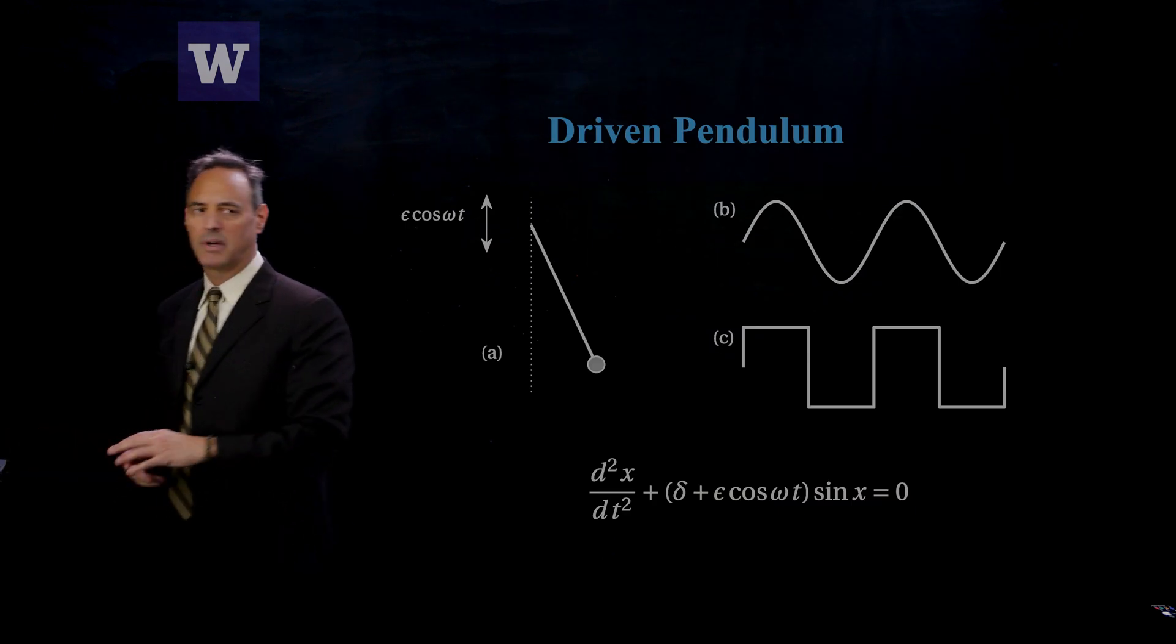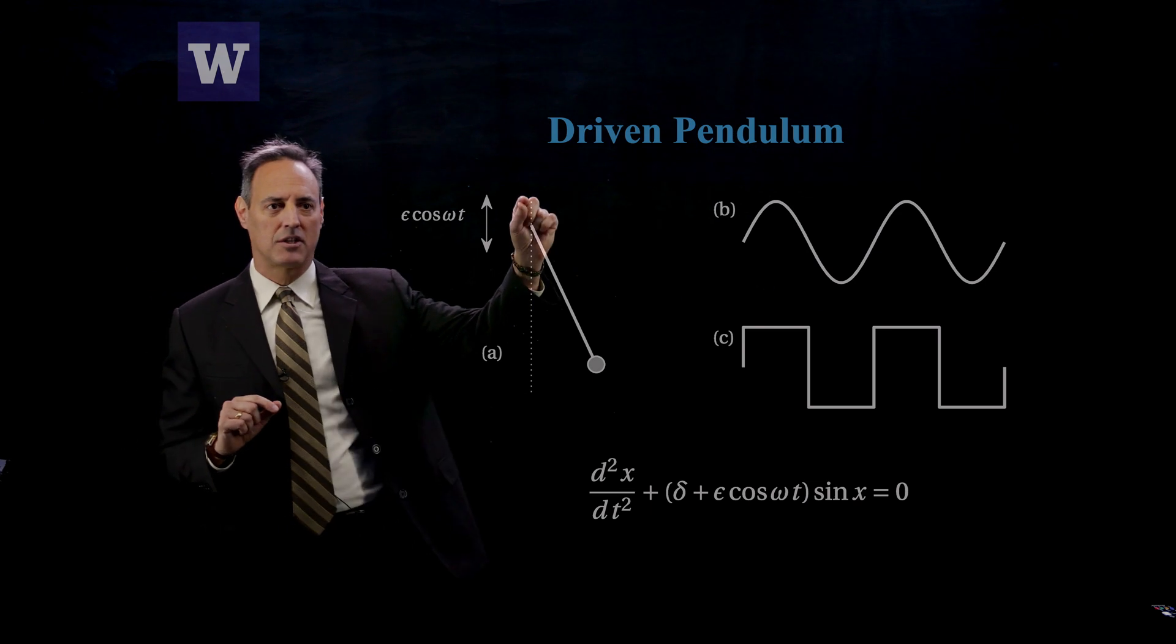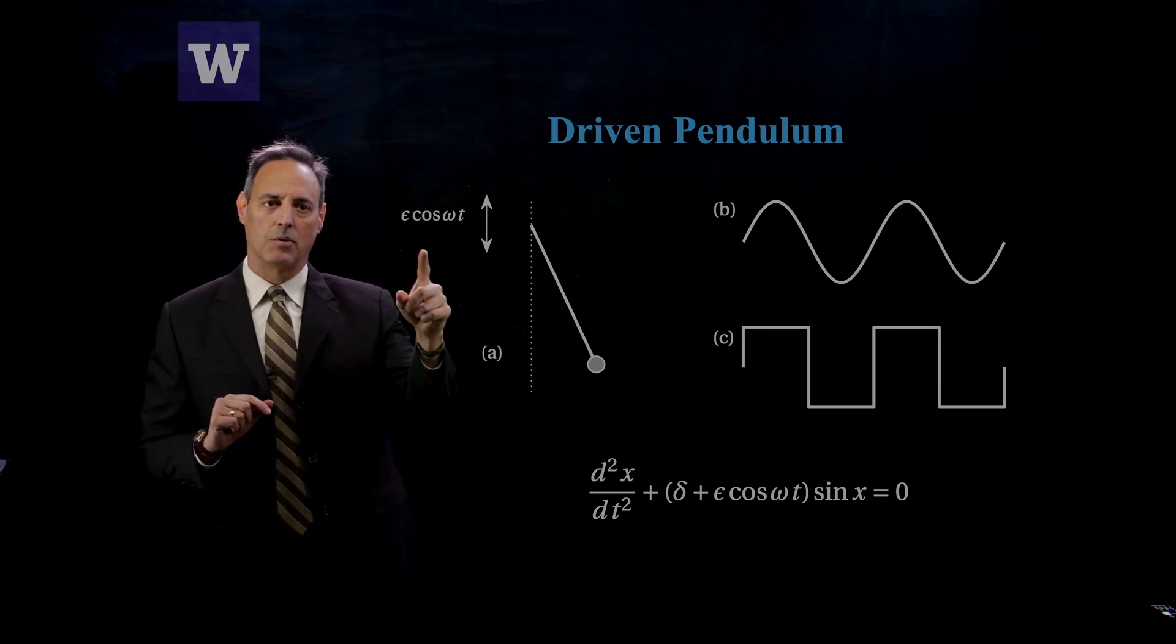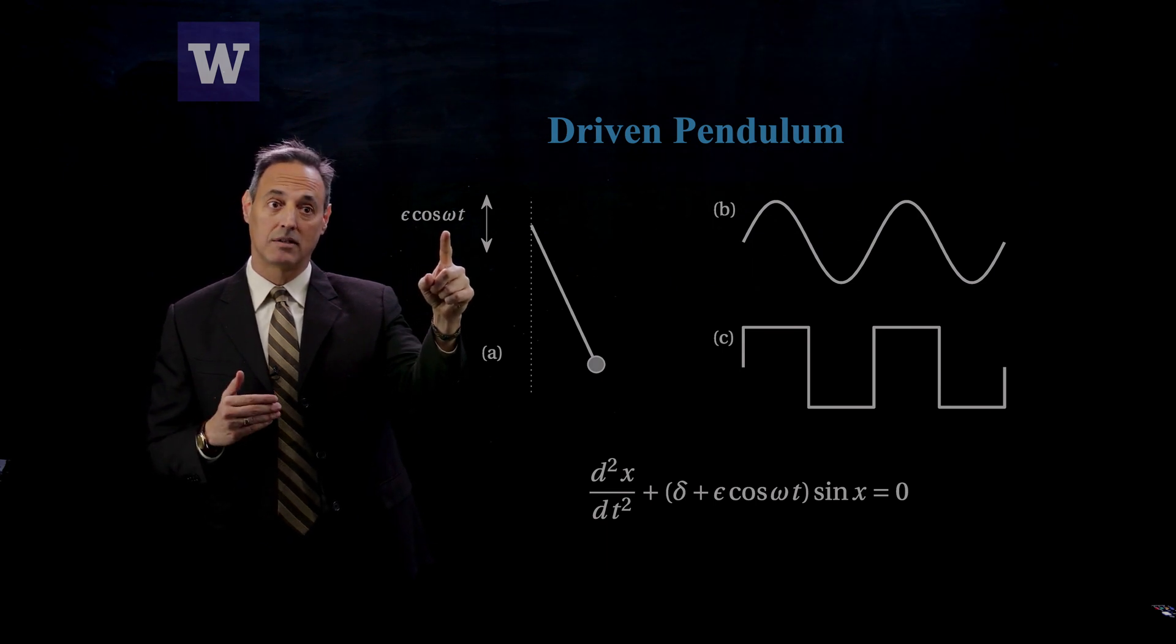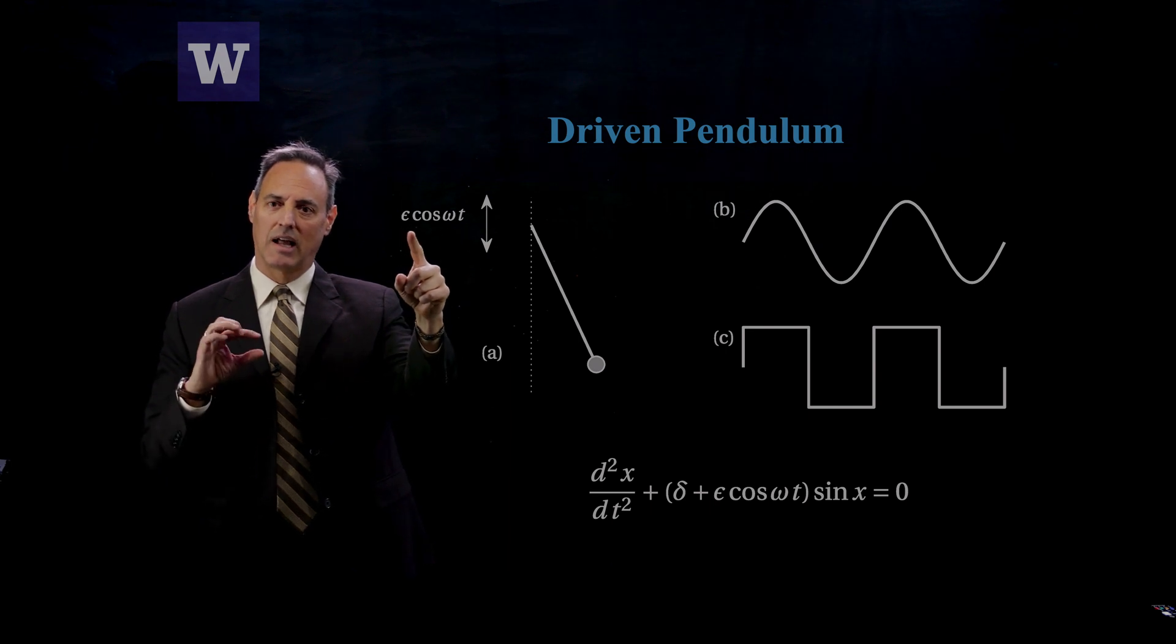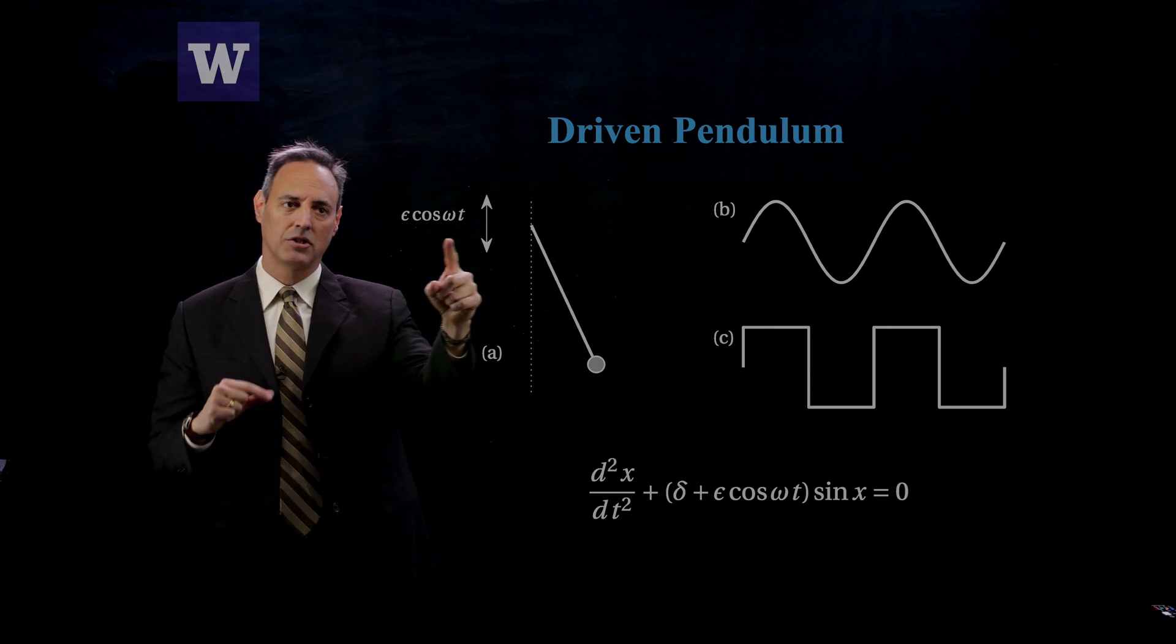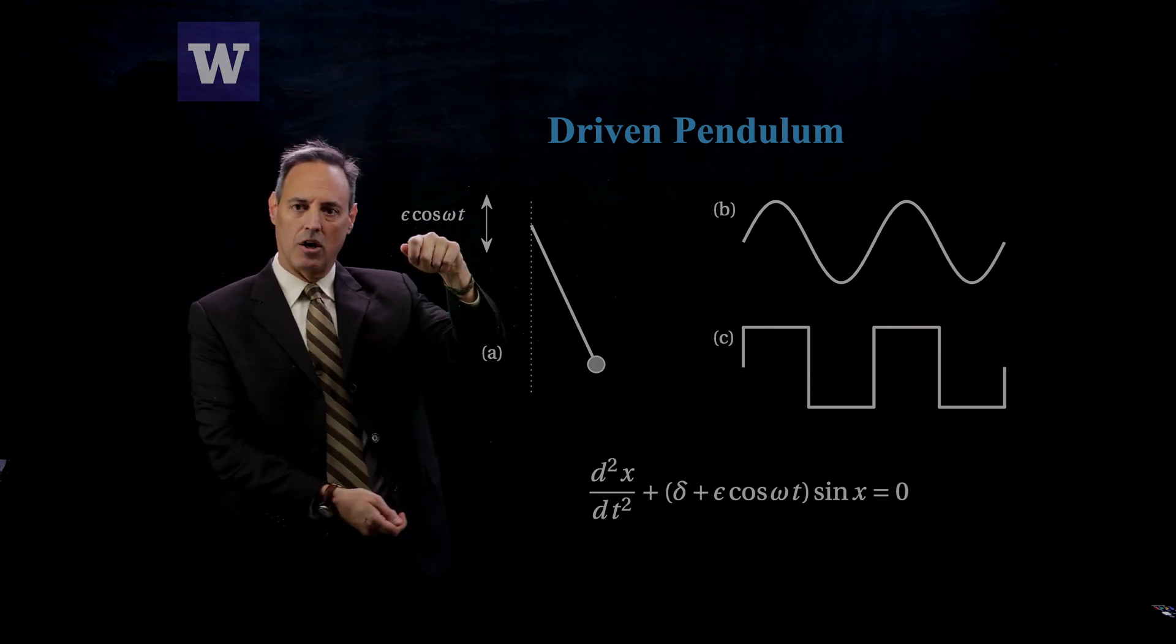What we want to do is take the pendulum, and here's the picture of the pendulum, we're going to drive this thing. In particular, the way we're going to drive it is we're going to take the support here and oscillate it back and forth. Let's say with some amplitude epsilon and cosine omega t. So omega is going to be the driving frequency, epsilon is going to be the amplitude of those oscillations.